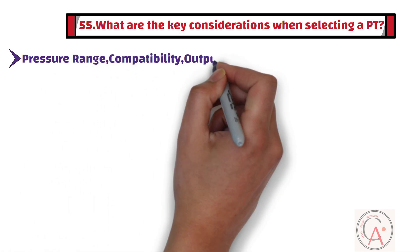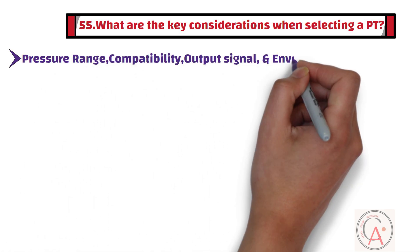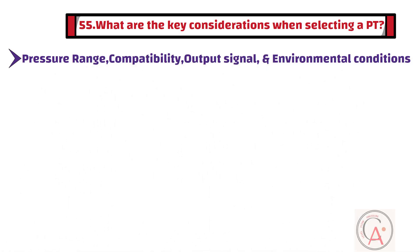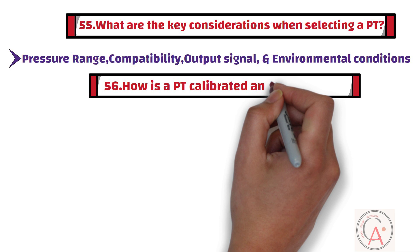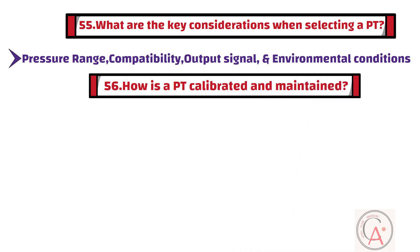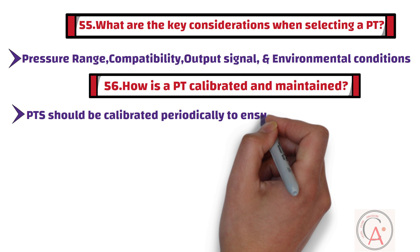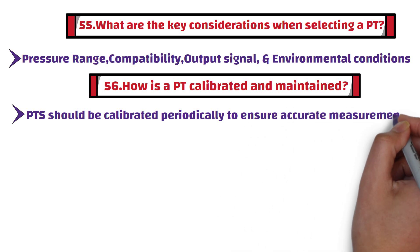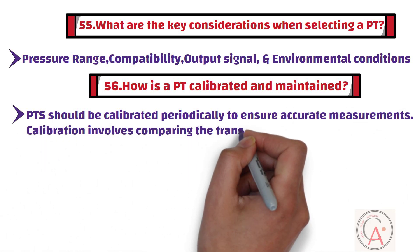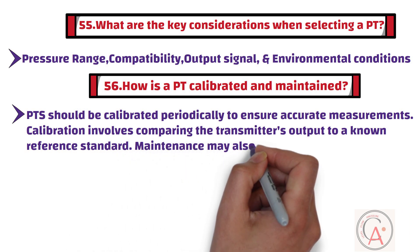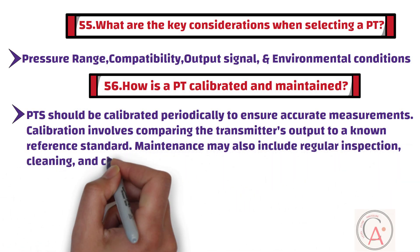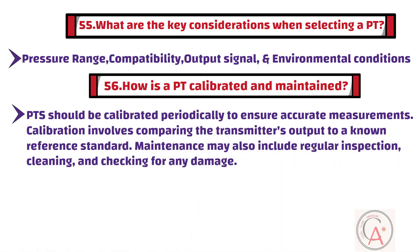Question 56: How is a pressure transmitter calibrated and maintained? Pressure transmitters should be calibrated periodically to ensure accurate measurements. Calibration involves comparing the transmitter's output to a known reference standard. Maintenance may also include regular inspection, cleaning, and checking for any damage. Some transmitters can be adjusted to correct for deviations from the specified accuracy.